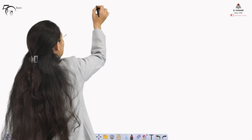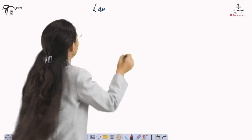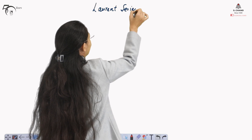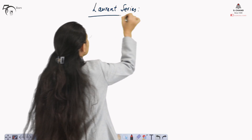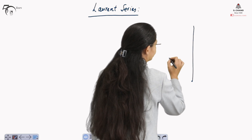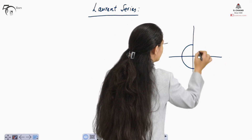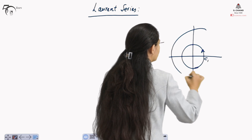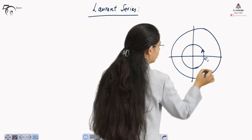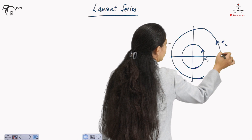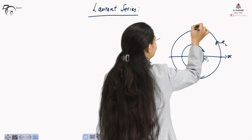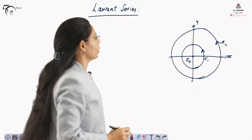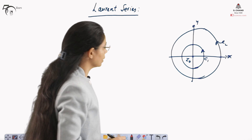Laurent series can be understood as an expansion of the Taylor series — it is the expansion of any function. For this, suppose two concentric circles are there: this is C1 and this is C2. Since they are concentric, let me say that they are concentric at z equals to z naught. So the center for both the circles is z naught.